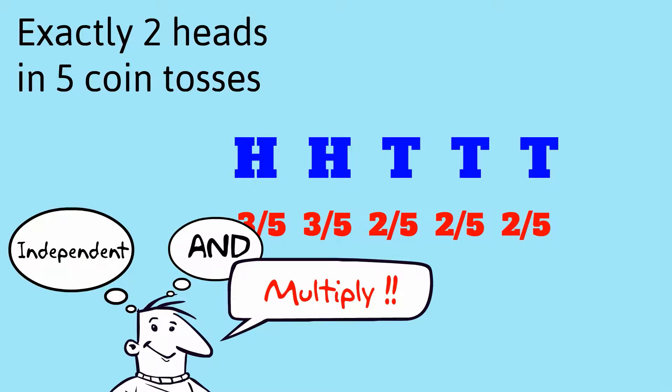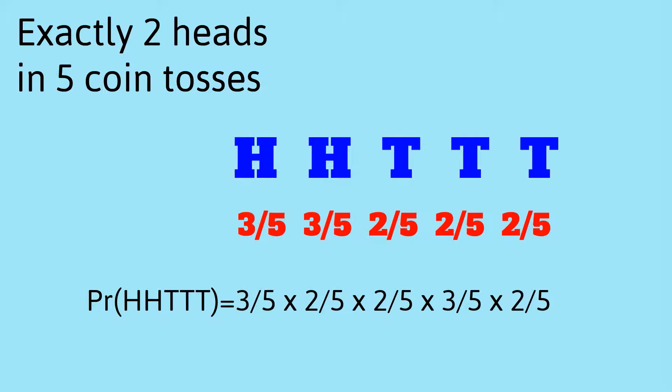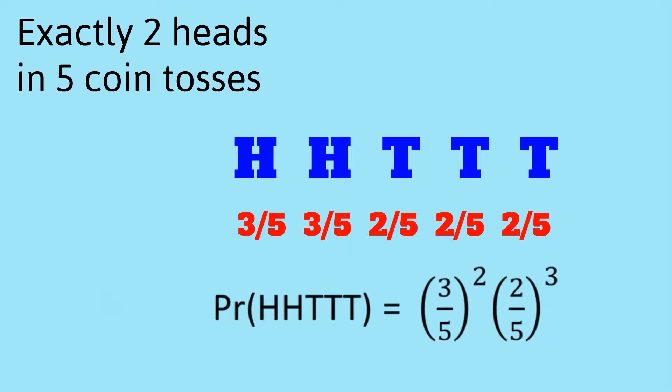So we end up with that the probability of two heads and then three tails is three-fifths squared times two-fifths cubed.